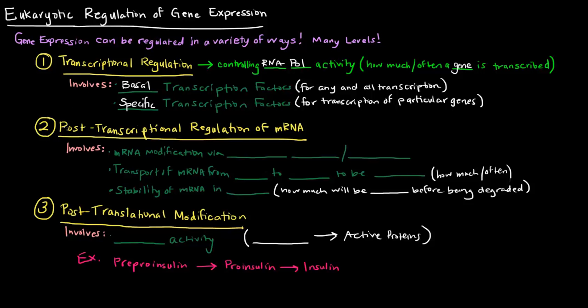So the next thing is post-transcriptional regulation of mRNA. So mRNA, once it's made, it can be modified via this process called alternative splicing. And I actually want to write that in hot pink because I want it to be an important idea.